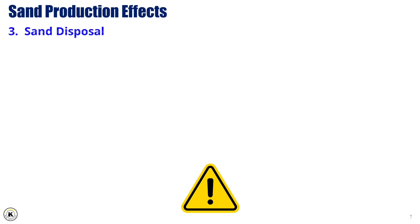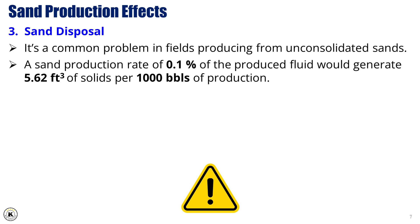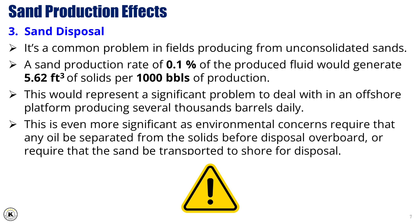Sand disposal is a common problem in fields producing from unconsolidated sands. A sand production rate of 0.1% of the produced fluid would generate 5.62 cubic feet of solids per 1,000 barrels of production. This would represent a significant problem on an offshore platform producing several thousands of barrels daily, especially as environmental concerns require that oil be separated from solids before disposal overboard, or that sand be transported to shore for disposal.